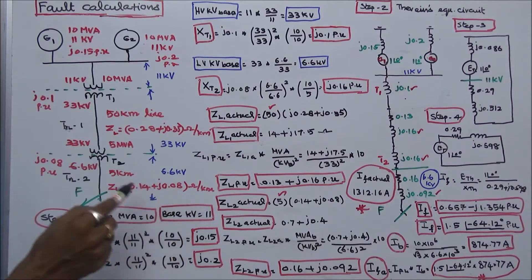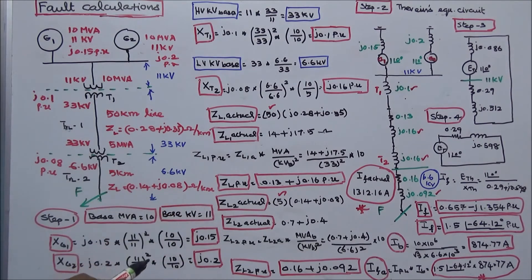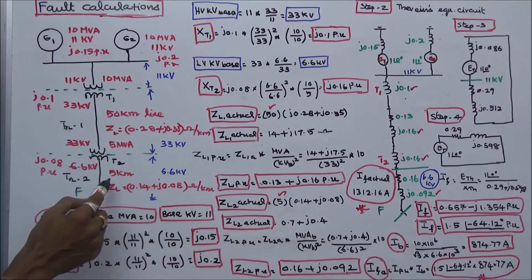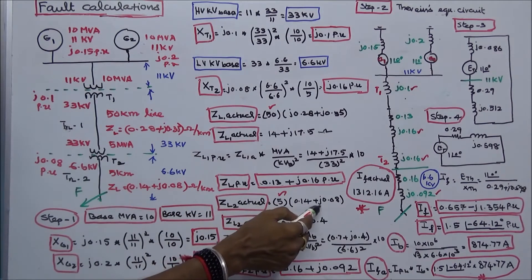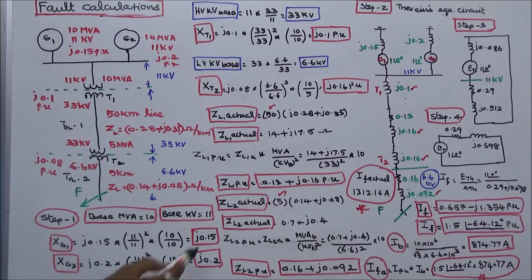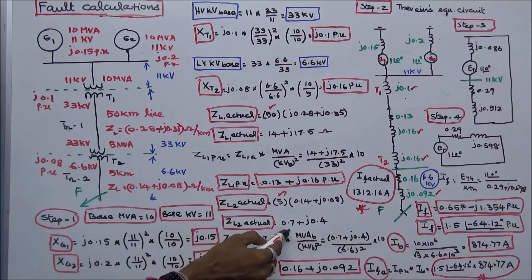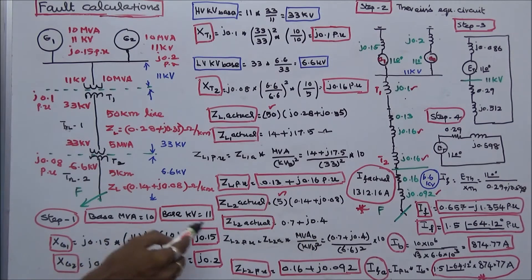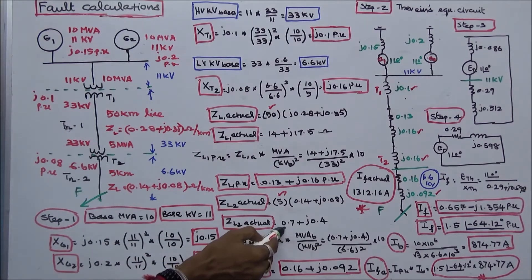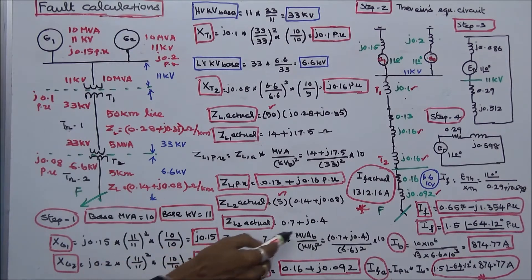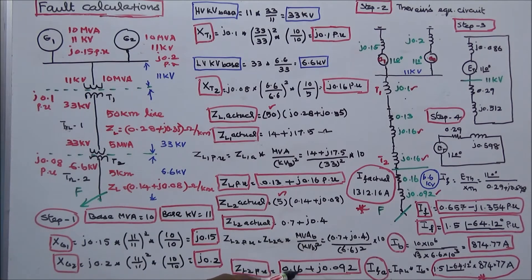Similarly, the per-unit impedance of Transmission Line 2: the length is 5 km and the impedance is 0.14 + j0.08 ohms per km, giving an actual impedance of 0.7 + j0.4 ohms. The per-unit value is (0.7 + j0.4) × 10 / (6.6²) = 0.16 + j0.092 per unit.